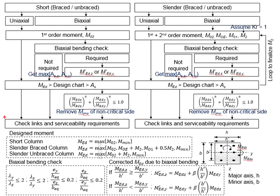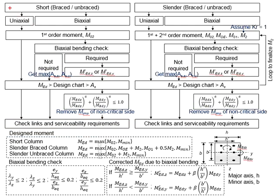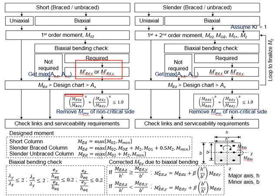Only then can you conclude the amount of reinforcement bar in the column. After that, you will proceed with checking the link and the serviceability requirement. If you observe the calculation step for the short column, you will see there are 3 routes. First is when the moment is acting in the uniaxial direction. Second route is that there will be biaxial bending, but when it comes to the biaxial bending check, the biaxial bending can be ignored, leading to the second route. And then the third route would be that you have to consider the biaxial bending effects, leaving you to the third route.